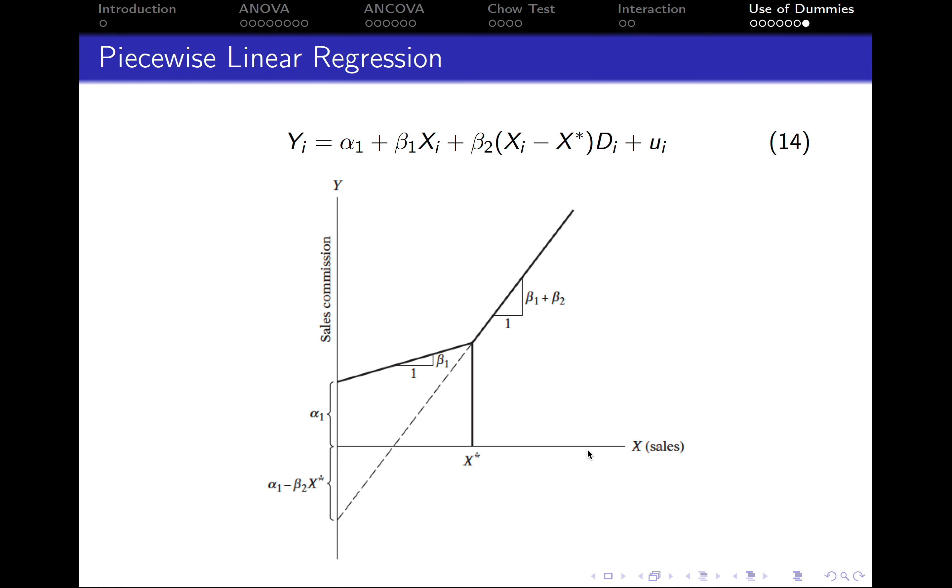On this slide, you can see a more technical graph of the above equation. Alpha 1 is the initial level of commission. When there are no sales, the value of commission equals alpha 1.